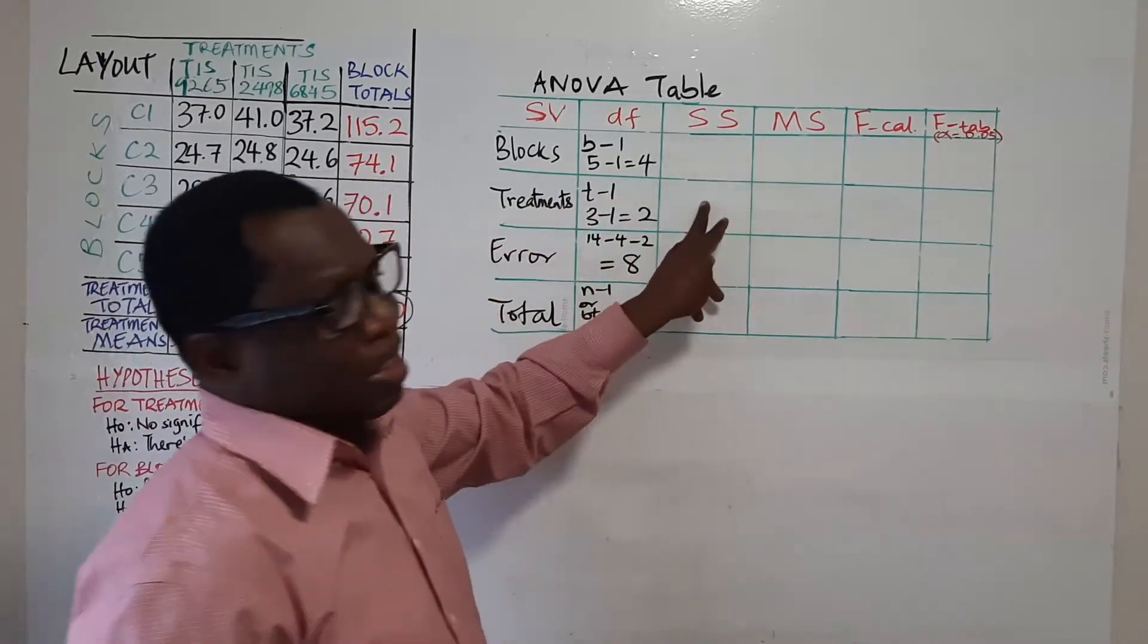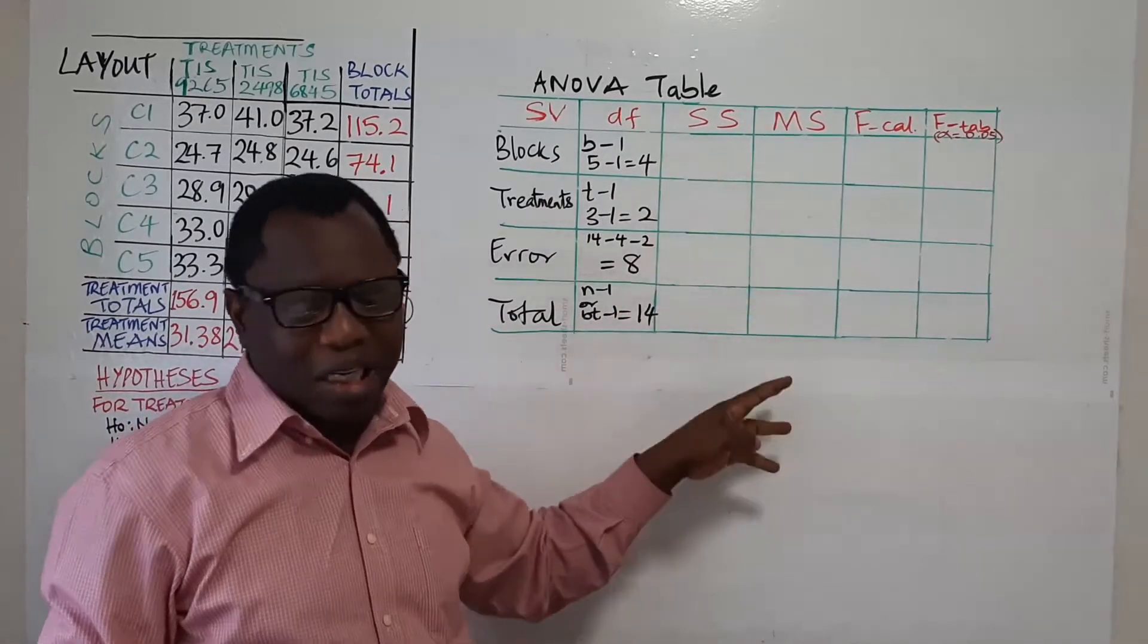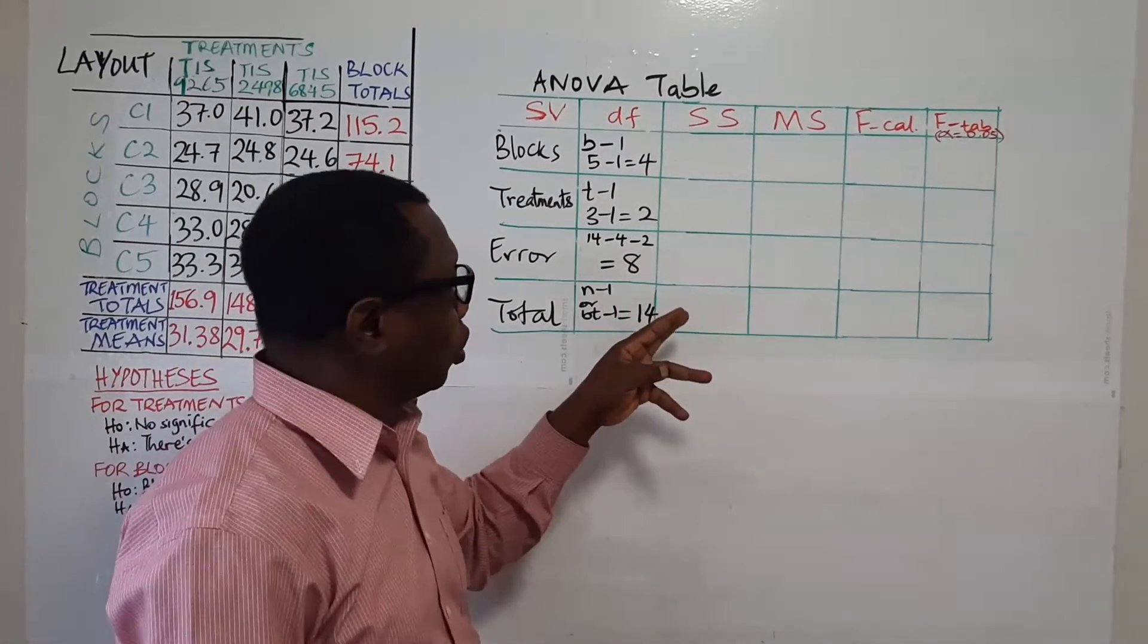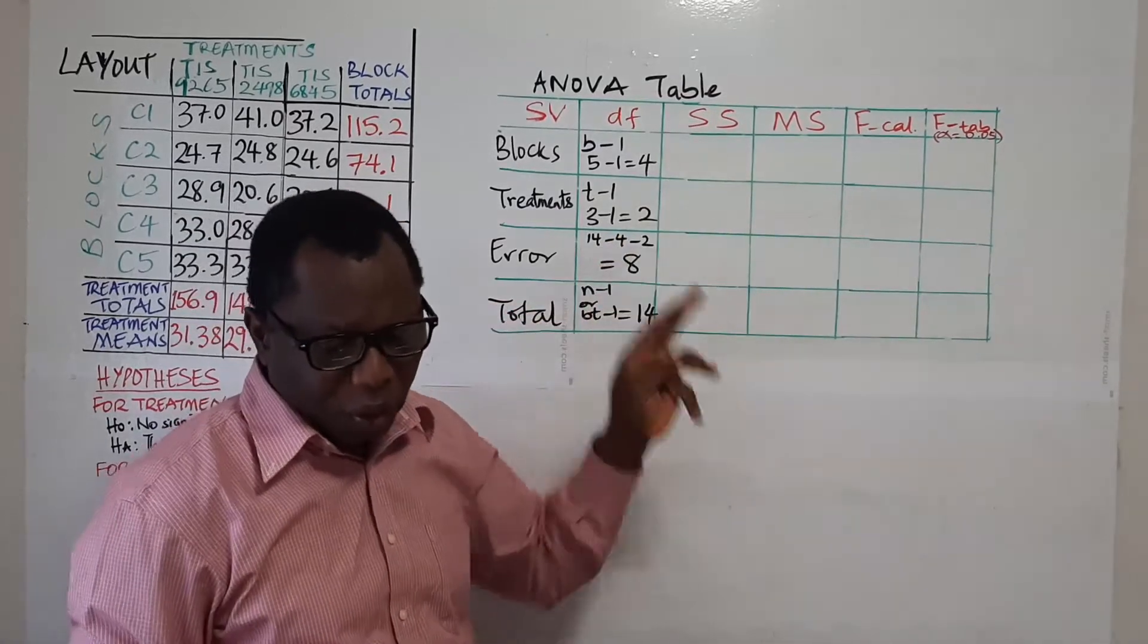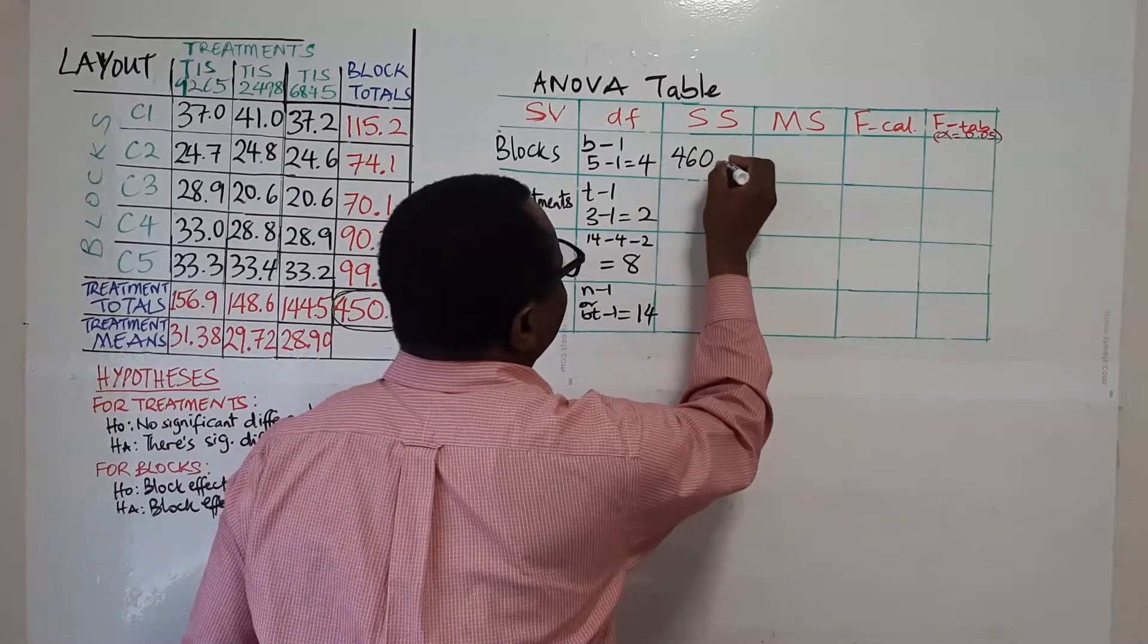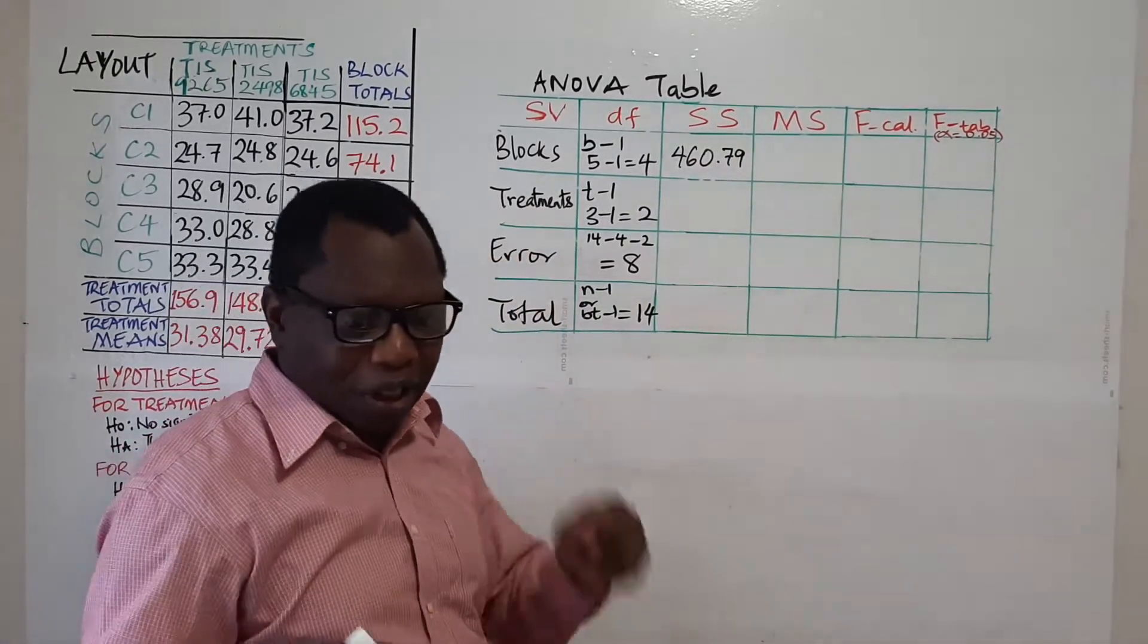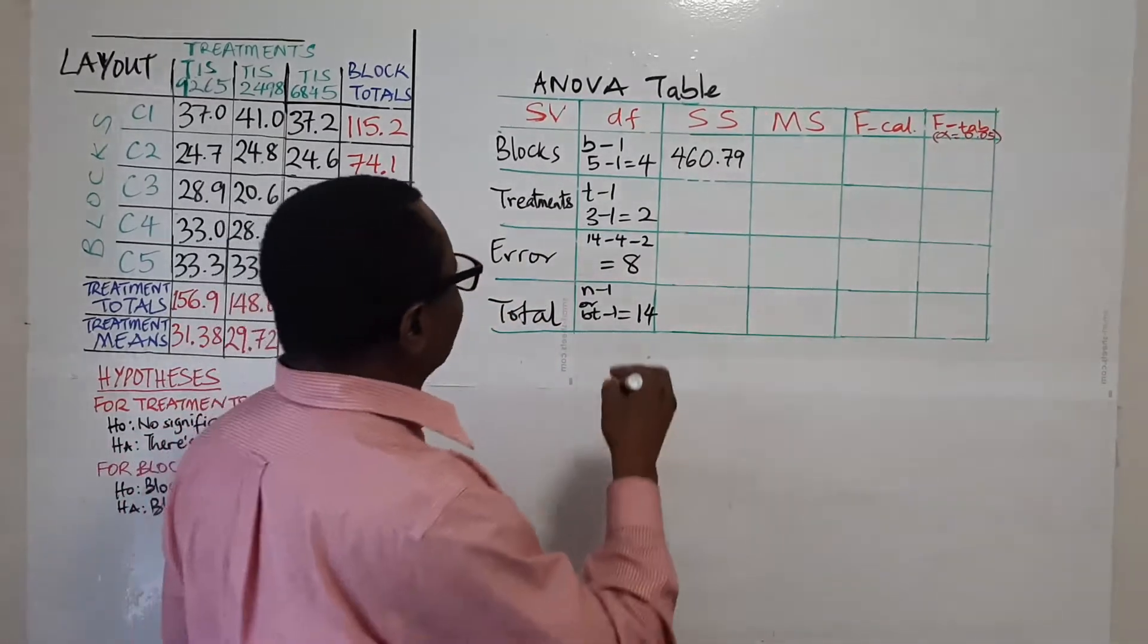So for our SS what happens? You recall we have computed all the SS before. So what we need to do is to just place them exactly where they should be. So this is 460.79. If you recall from the last video you can see how that is computed.